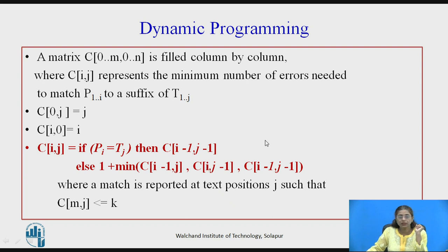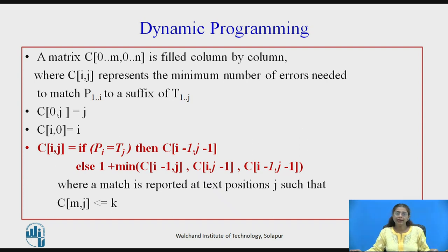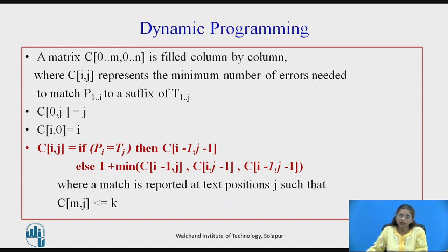There are many algorithms available; one approach is dynamic programming. Let us find the edit distance between two strings — one can be the text and one can be the pattern — and see whether the pattern will be found in the text considering k errors. We are going to fill a matrix C of size (0 to m) by (0 to n), where m is the length of the pattern and n is the length of the text.